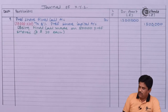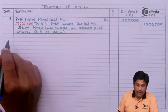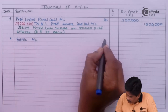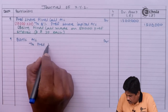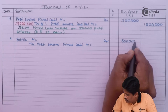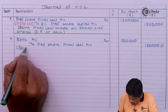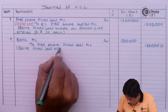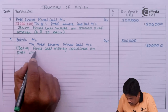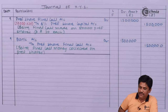Final call made on 50,000 preference shares at Rs 30 each. When you collect the final call, the entry is: bank account debit to preference share call account. After collecting the final call, the preference shares are fully paid up.